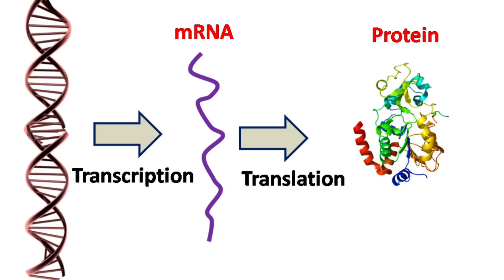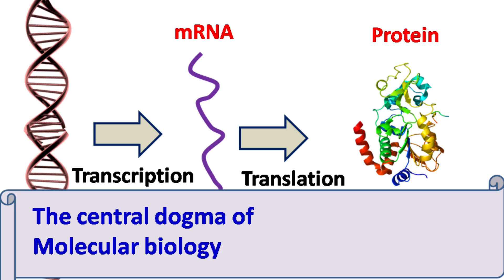This flow of information from DNA to RNA to protein is also known as central dogma of molecular biology. This was given by Francis Crick in the year 1958.